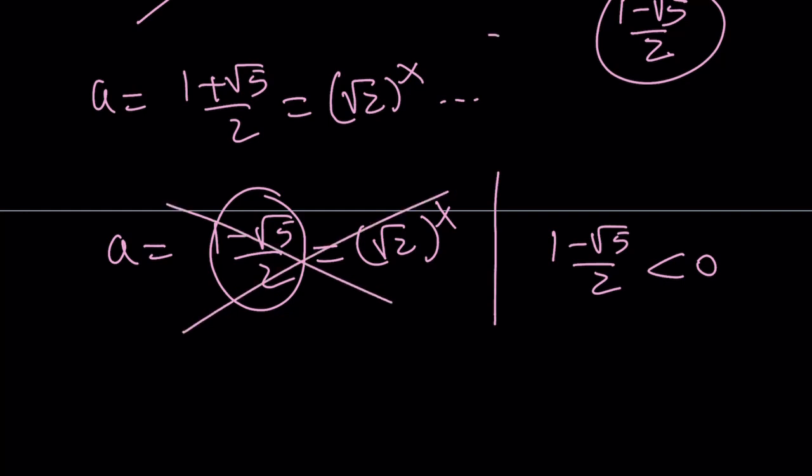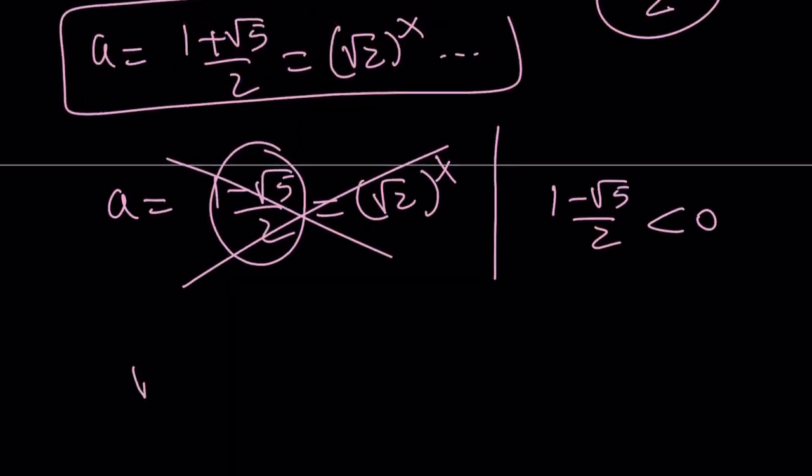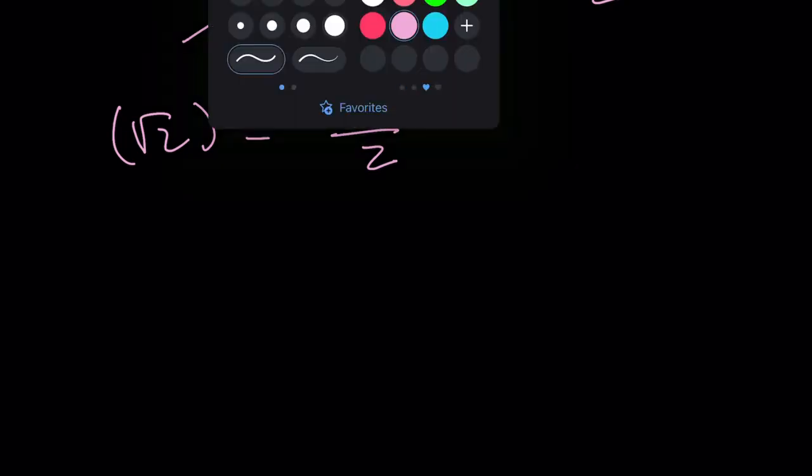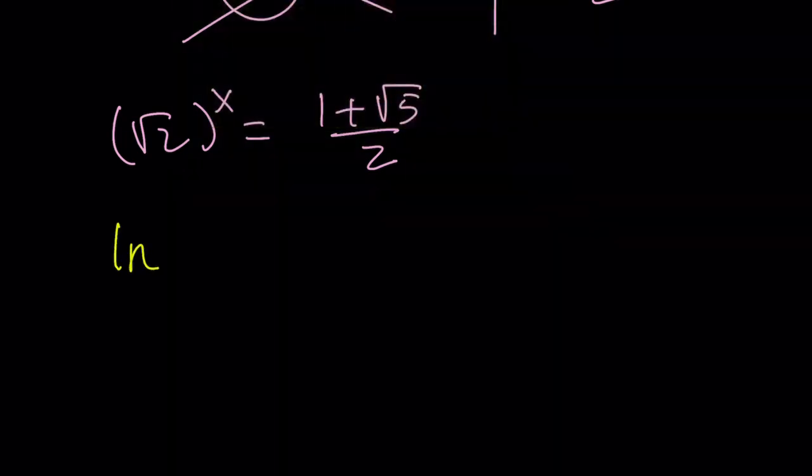So we're not going to get a solution from here. But we're going to go with the first one. And that's going to give us the following. Square root of 2 to the power of x equals 1 plus root 5 over 2. This is where the golden ratio comes in. Right. So what are we going to do? We have a variable in the exponent. So let's go ahead and ln both sides.